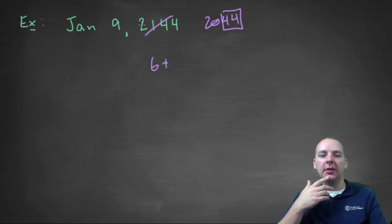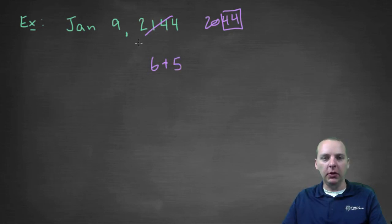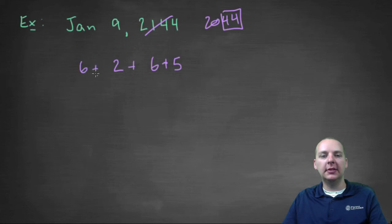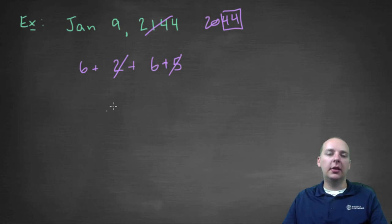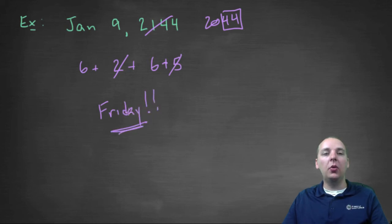Now we do have to make an adjustment for the century, which means we add five to that answer. Then nine modulo seven is two, and January's month code is six. So we've got two and five make seven — that's a wash modulo seven — and six and six make twelve, twelve modulo seven is five. So this would be on a Friday... except wait, it's not a Friday. What did we mess up?